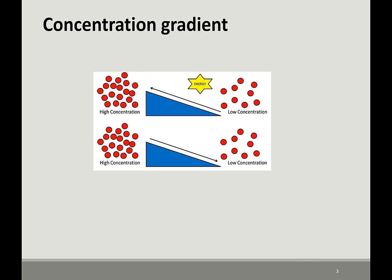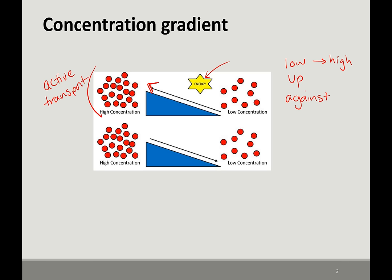Another set of terms we use with concentration gradient: we can talk about something moving up or against the concentration gradient. If something is moving up or against the concentration gradient, it requires energy — it's hard to do, like going uphill. You're going from low to high concentration. This is the section called active transport; it takes energy to move these molecules against their concentration gradient.